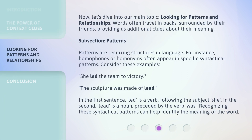Now, let's dive into our main topic: looking for patterns and relationships. Words often travel in packs, surrounded by their friends, providing us additional clues about their meaning. Patterns are recurring structures in language. For instance, homophones or homonyms often appear in specific syntactical patterns. Consider these examples: 'She led the team to victory.' 'The sculpture was made of lead.' In the first sentence, 'lead' is a verb following the subject 'she.' In the second, 'lead' is a noun preceded by the verb 'was.' Recognizing these syntactical patterns can help identify the meaning of the word.